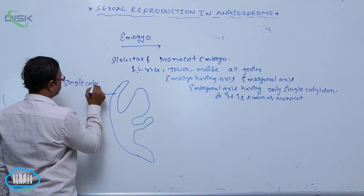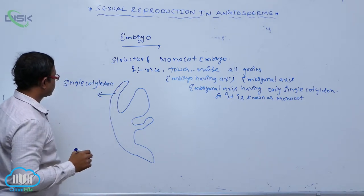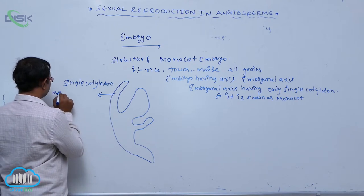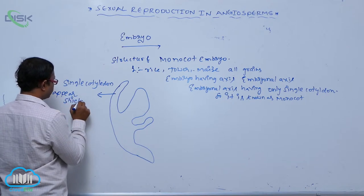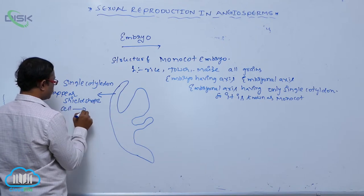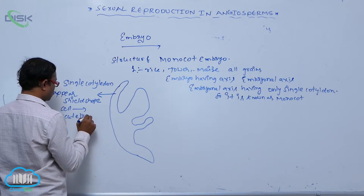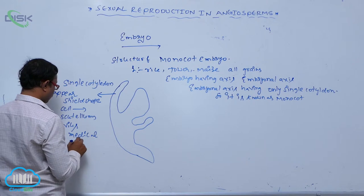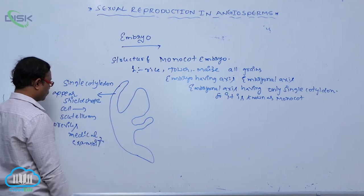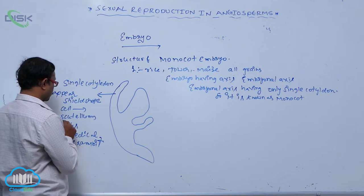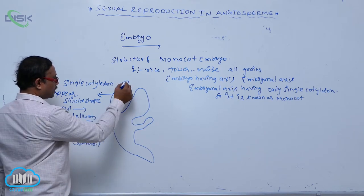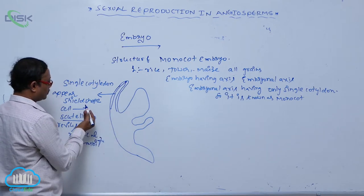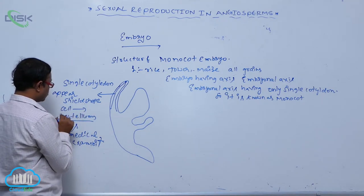This single cotyledon is attached to the embryonal axis. It is a shield-shaped structure known as the scutellum. This is an important point for almost all competitive exams, especially medical exams — the scutellum is the single cotyledon in monocotyledonous plants, attached to the embryonal axis on one side.